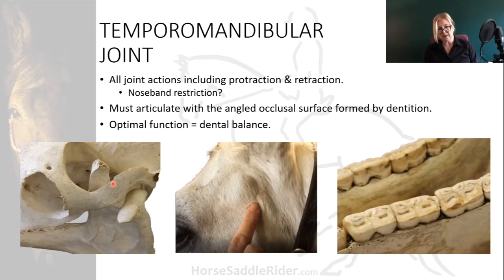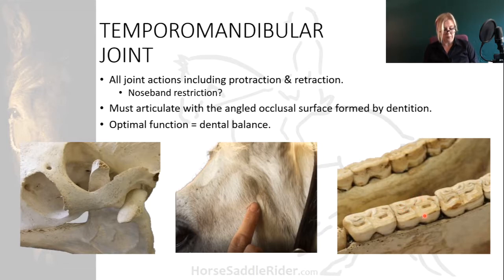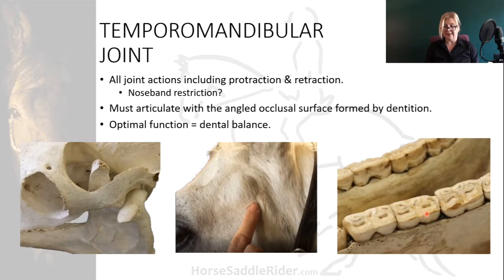Because the occlusal surface of the cheek teeth is angled, sharp points can develop, causing compensatory movement as the horse attempts to avoid contact with the soft tissue and resultant or existing laceration.